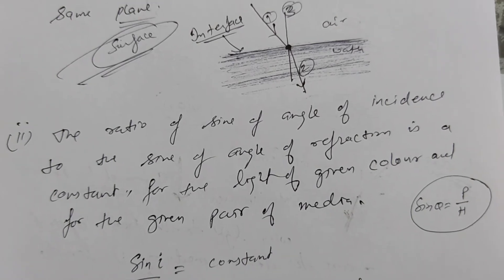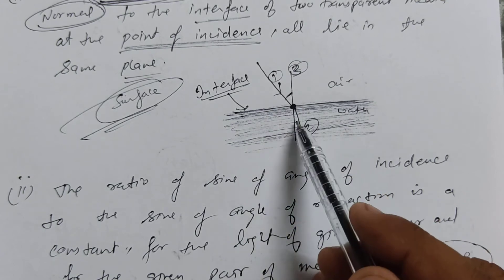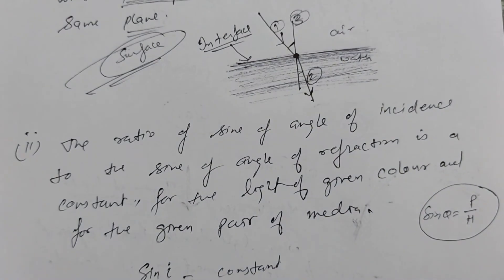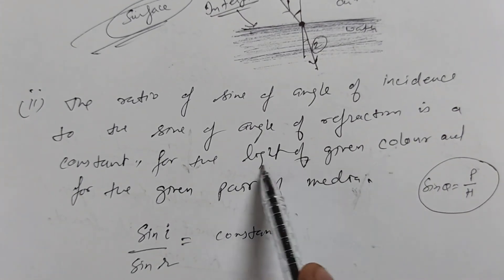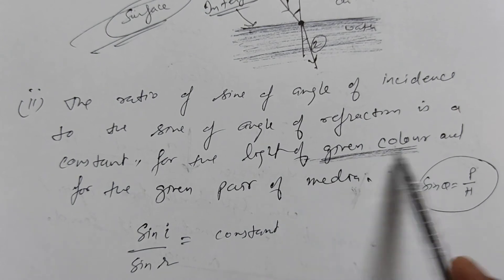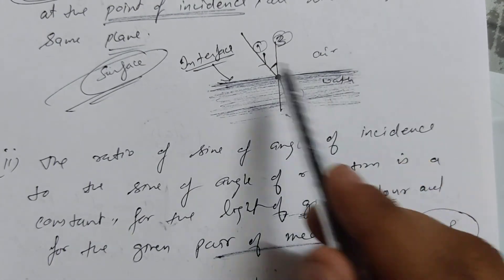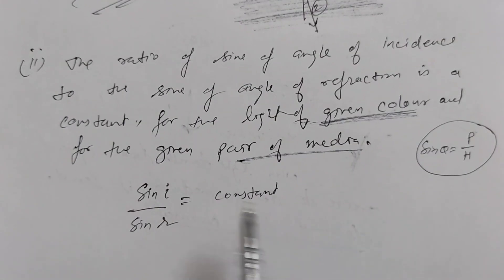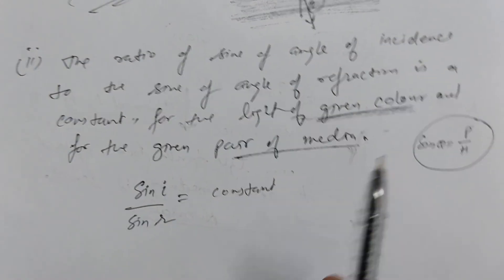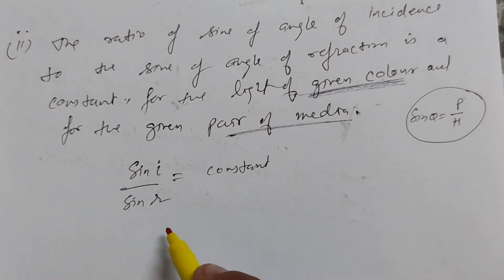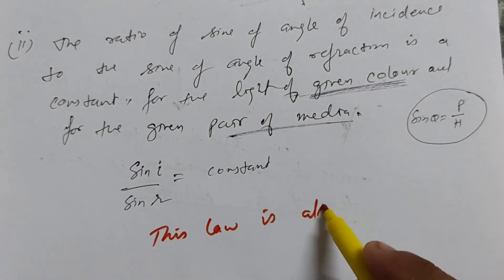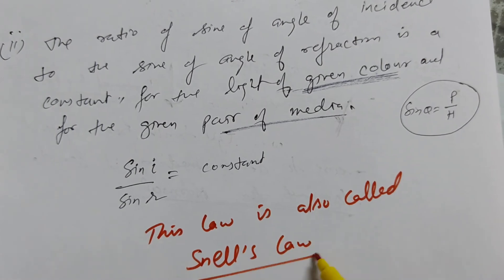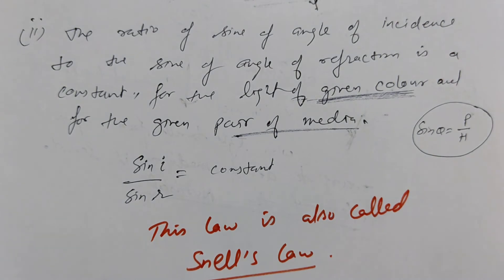Sine i upon sine r is a constant value. This means that if you change i, r changes accordingly, and in every case sine i upon sine r remains constant — fixed. Keep the light the same, and do not change the medium, like air and water — then this constant stays the same. If you change the medium, say from water to glass, then the constant changes. This second law is called Snell's Law.